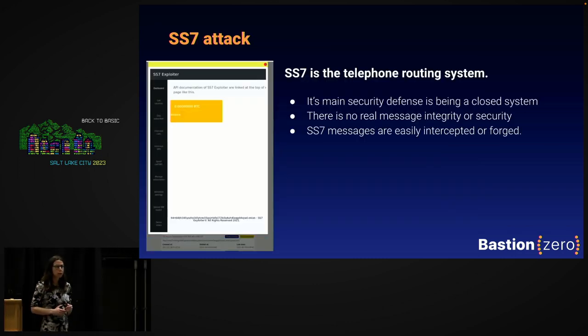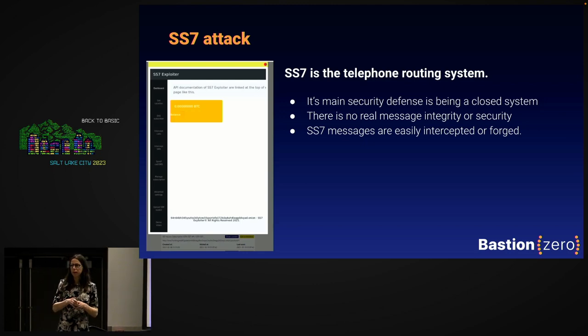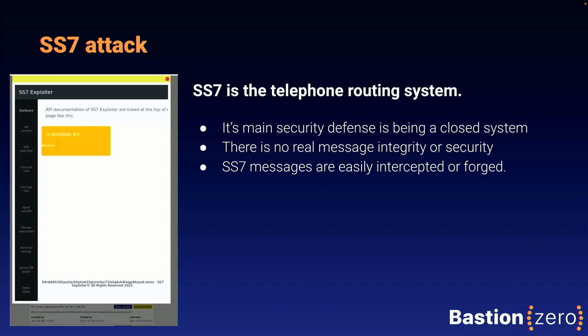SS7 is the protocol that runs the telephone network — like BGP for phones. It's really, really super old and lacks a lot of the safeguards of modern routing protocols. The security of the SS7 network used to be based on the fact that it's hard to just enter the network if you're not a telephony provider. But once you're in, security is terrible. What's happened is that there's a whole ecosystem of SS7 malware that will allow you to do things like steal phone numbers — and it's actually pretty easy to find if you just Google it. So phone-based MFA should be completely deprecated, at least for business applications.